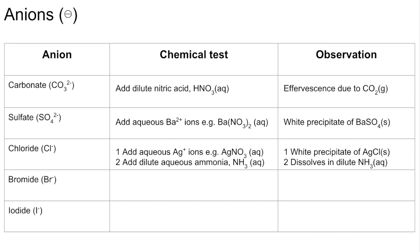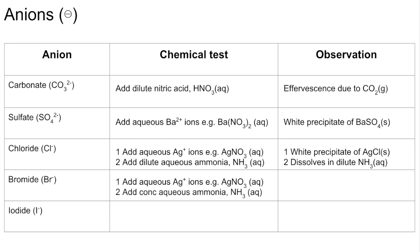Bromide is a very similar test with one slight difference. You add aqueous silver ions again, but then you add concentrated aqueous ammonia. You'd expect to see a cream precipitate of silver bromide, and that dissolves in concentrated ammonia — it doesn't dissolve in dilute.